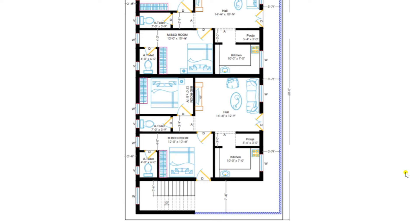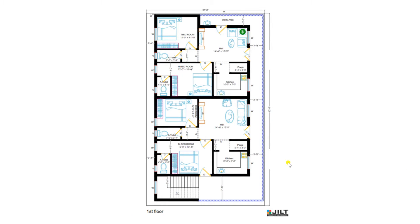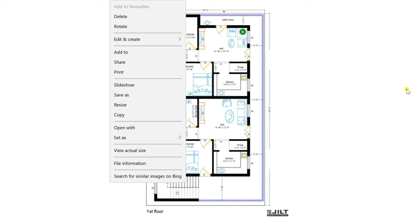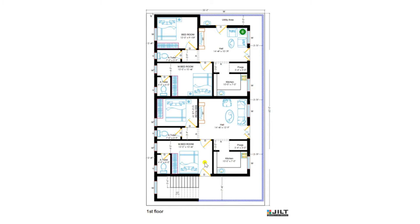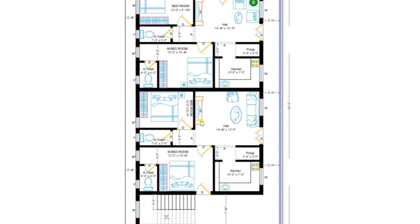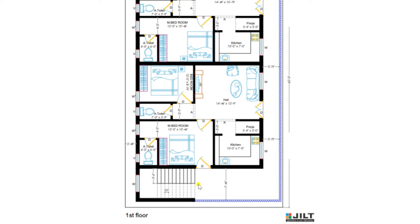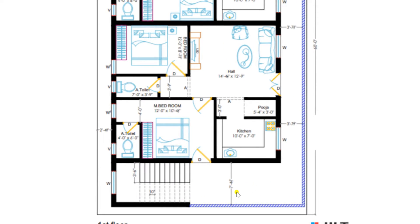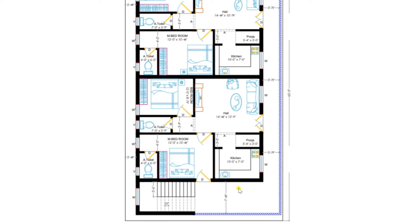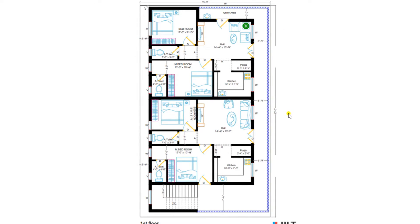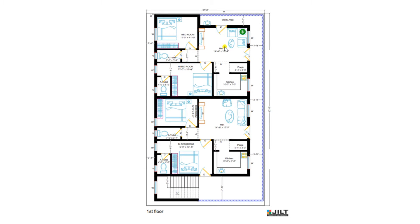Now we are entering to the first floor. As per client requirement we have designed 2 portions. From the staircase seen in the ground floor, we have entered to the first floor. You can view there is a lavish balcony of size 7 feet 4.5 inches, and it is also having full ventilation. On all three sides we have given sufficient setbacks. The balcony is available on the right side, left hand side and the back side.